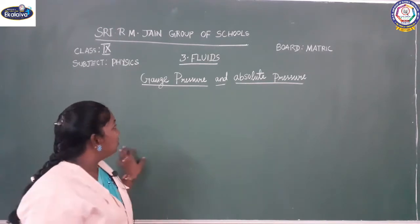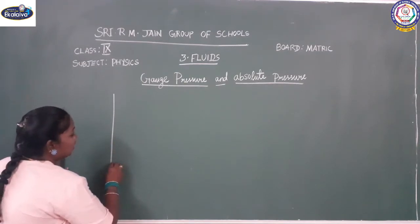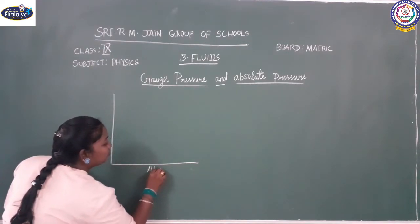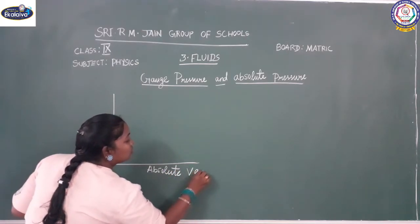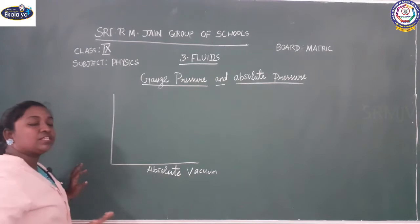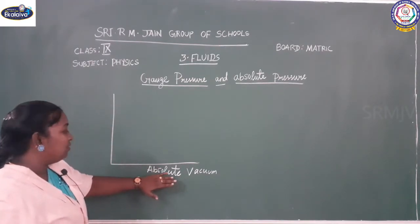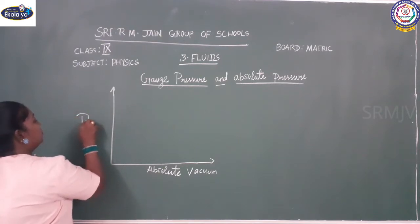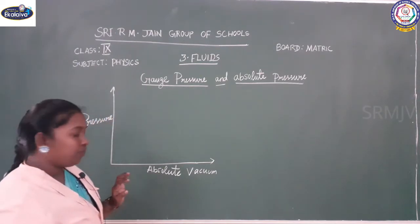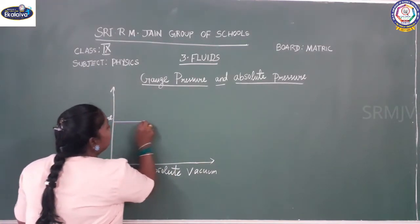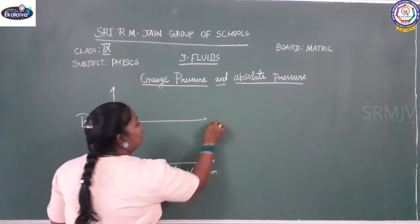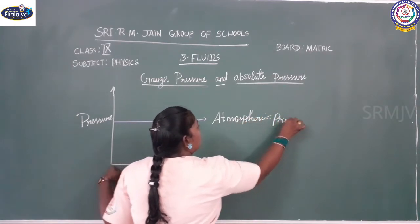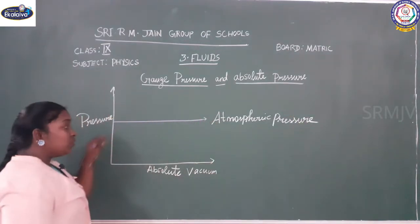I will explain with a representation. There is a vertical line and a horizontal line. This horizontal line indicates absolute vacuum — the minimum, which means nothing is present, no particle is present, completely zero. That is called absolute vacuum. The vertical line represents pressure. I am going to draw a common line here which represents the atmospheric pressure.